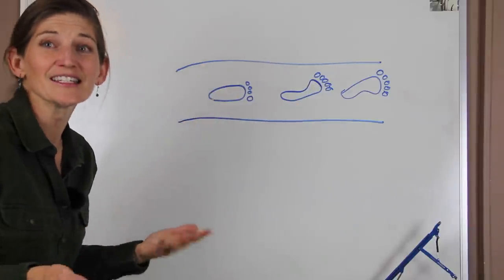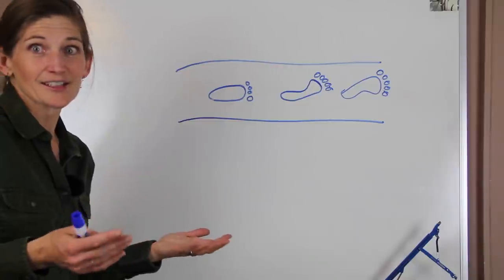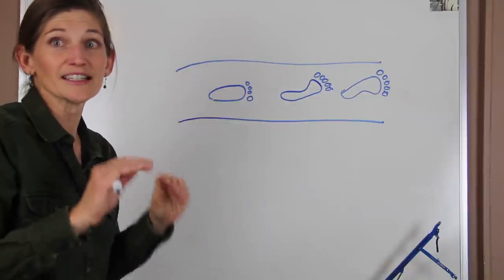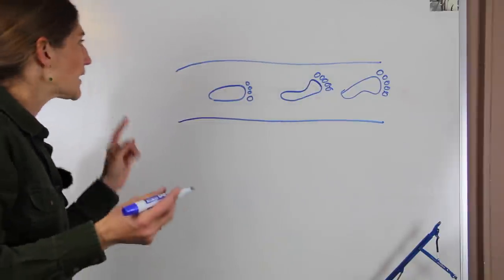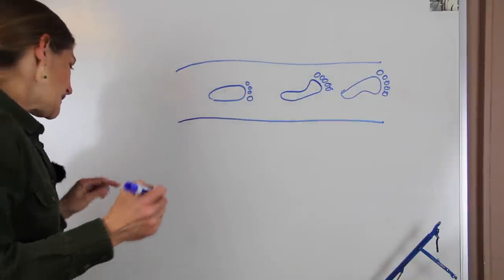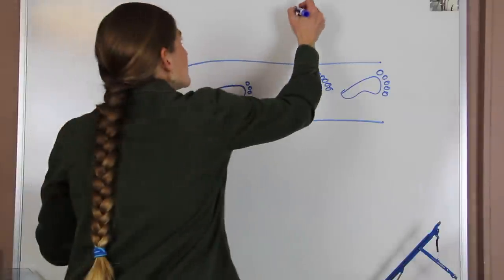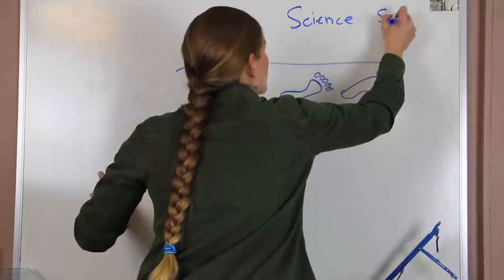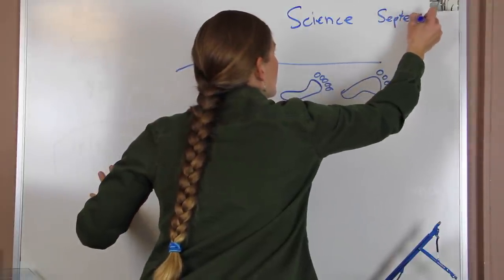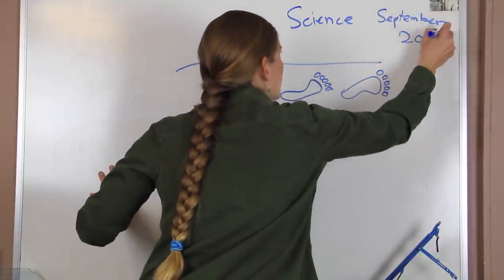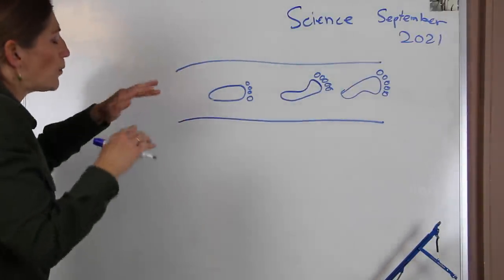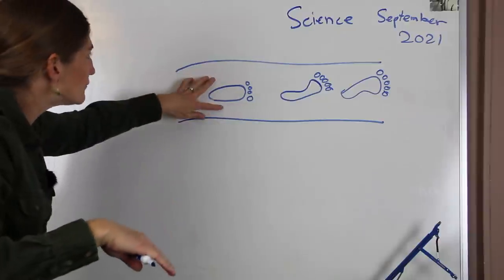White Sands is different because it's gypsum. We can't go and do age dating on the gypsum layer itself - it's just not possible. But what the researchers did - and this is in the journal Science, published September 2021 - what they ended up finding out is...